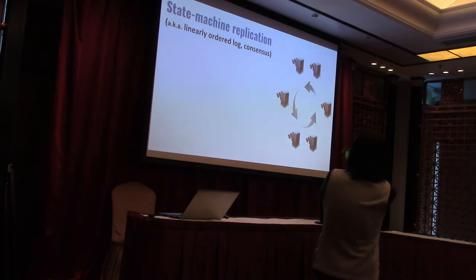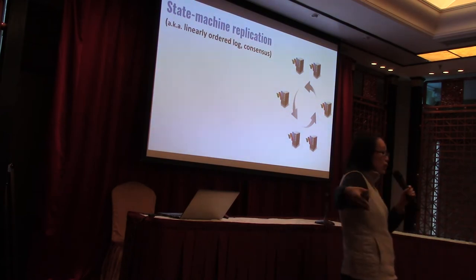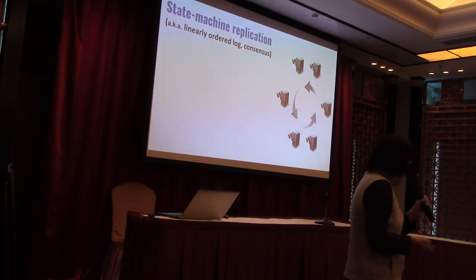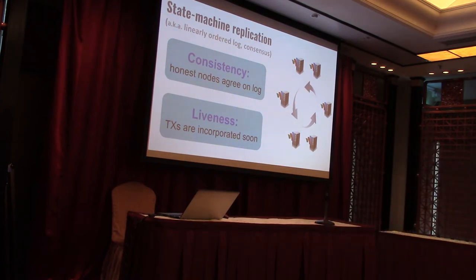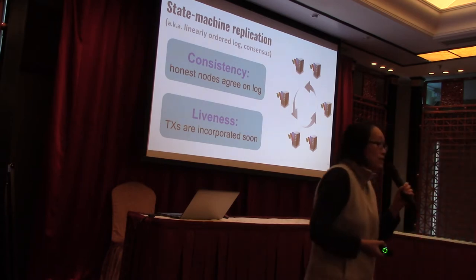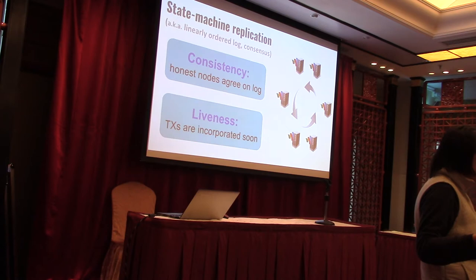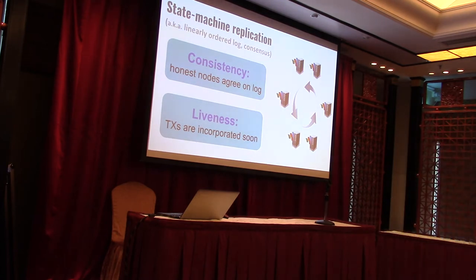In state-machine replication, imagine we have a set of servers — in this case, Google Wallet servers. Google Wallet wants to avoid the kind of disaster that happened to Delta Airlines. These servers want to agree on an ever-growing linearly ordered log of transactions. There are two very important security properties: consistency and liveness. Consistency says that all the honest nodes must agree on the log — our logs have to be prefixes of each other. Liveness says that whenever a client submits a transaction, the transaction has to appear in all of the honest nodes' logs fairly quickly.